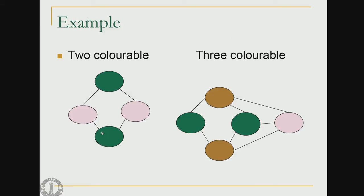The number of colors available is the number of registers in the machine, and a k-coloring of the interference graph can be mapped onto a register allocation problem with k registers. For example, a 2-colorable graph means the program uses only 2 registers; a 3-colorable graph uses 3 registers, with live ranges sharing registers when they do not interfere.